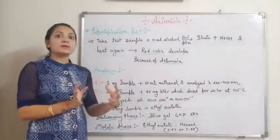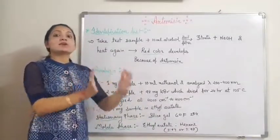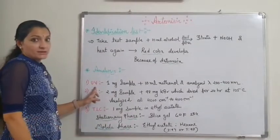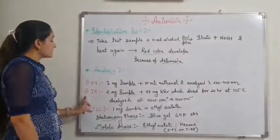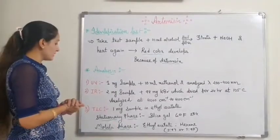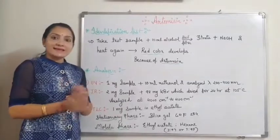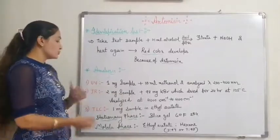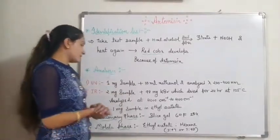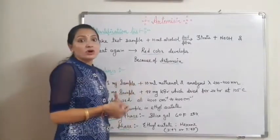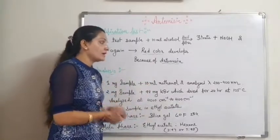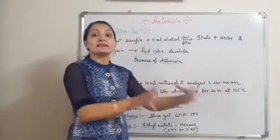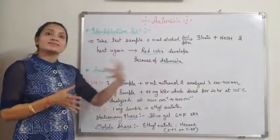Moving on to analysis of Artemisinin. Analysis can be performed by three methods: UV spectroscopic method, IR spectroscopic method, and TLC. For the UV method, we take a 1 mg sample, dissolve it in 10 ml methanol, and analyze at 200 to 400 nanometer wavelength, then find its concentration using a standard curve.